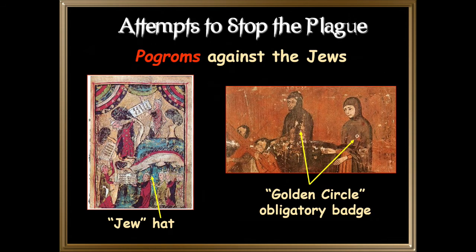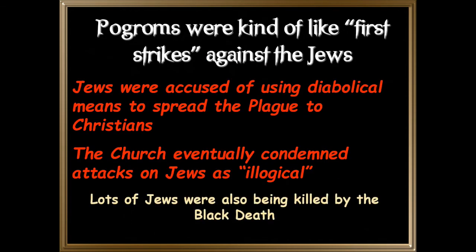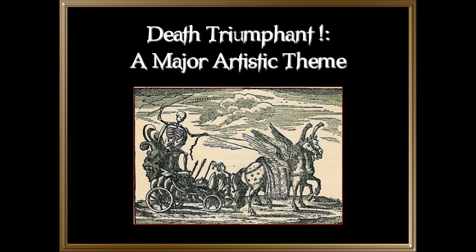Pogroms against the Jews. You can see pictures of Jews here with the typical Jewish hat, a golden circle, and the obligatory badge Jews often had to wear in the community. Pogroms were kind of like first strikes against the Jews — they were accused of using diabolical means to spread the plague to Christians. The church eventually condemned attacks on Jews as illogical, noting that large numbers of Jews were also being killed by the Black Death at the time.